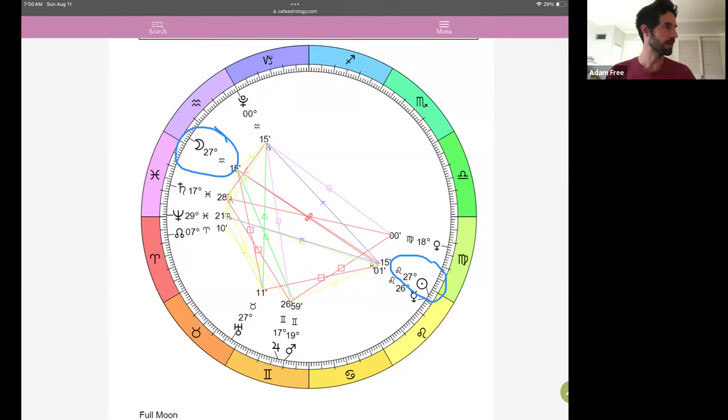So the full moon in Aquarius, some of the keywords for that are eccentrism, humanitarianism, idealistic. This is very much a humanitarian time during this full moon period. Now the full moon lasts for approximately two and a half days.